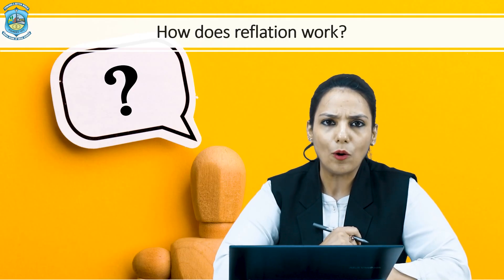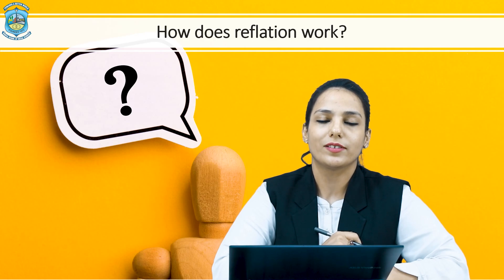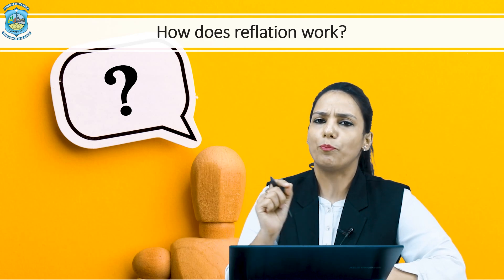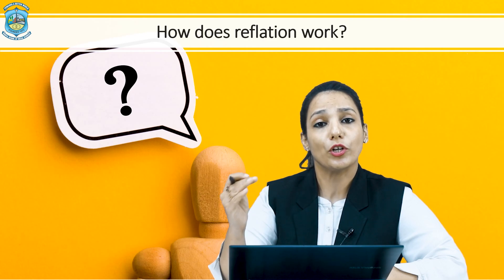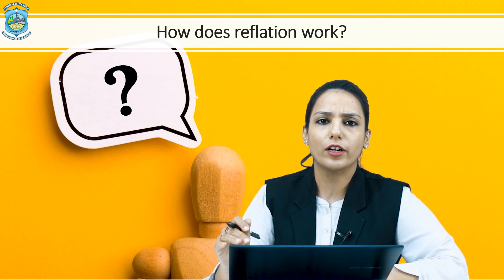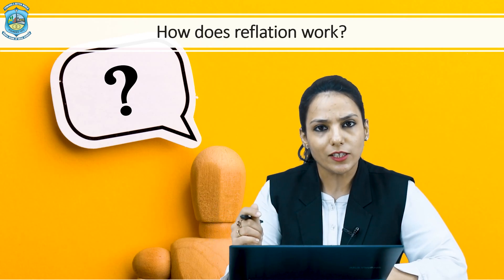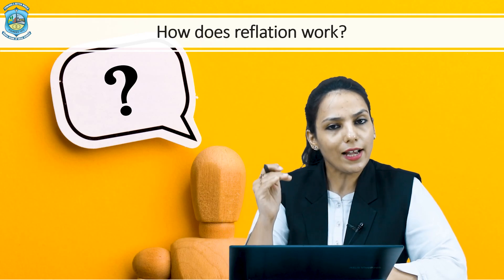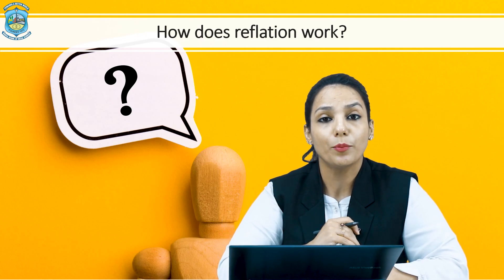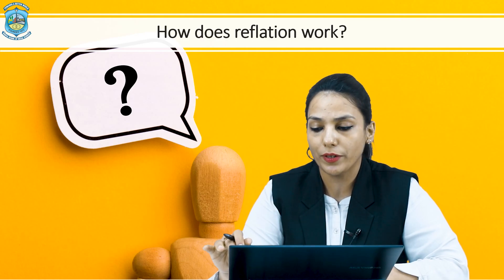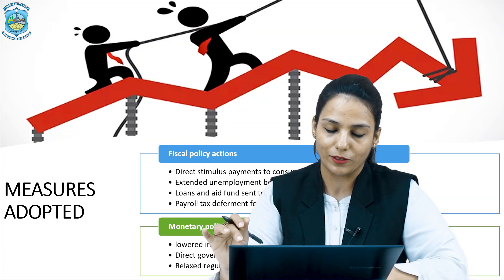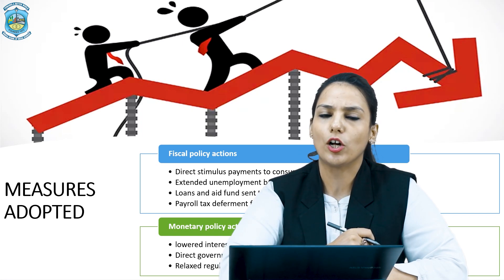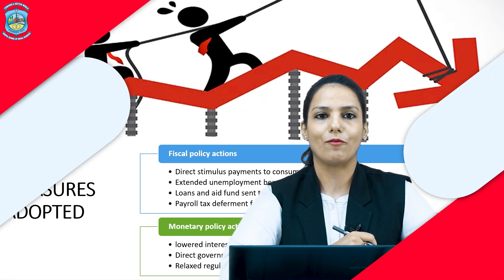Let us see how reflation works. Reflation is a policy enacted after a period of economic slowdown or contraction. It occurs when the economy is below full employment, and as such, economic stimulus has to be provided by the government, which increases prices. The measures adopted by governments fall into two categories.